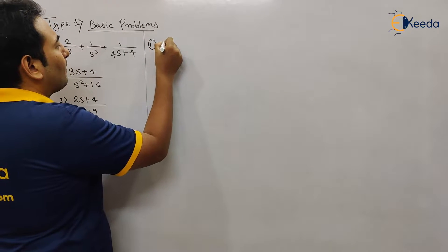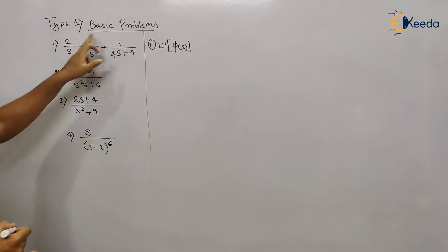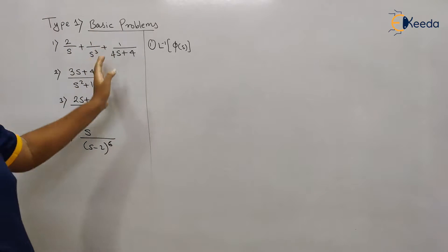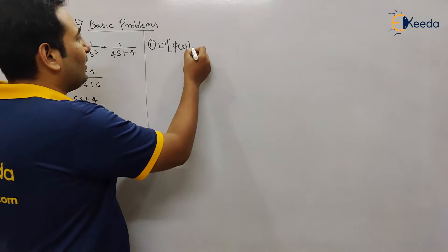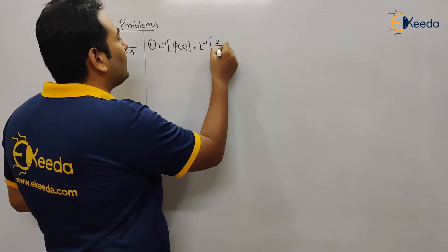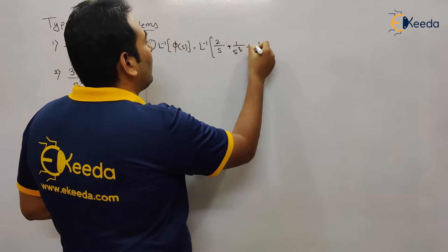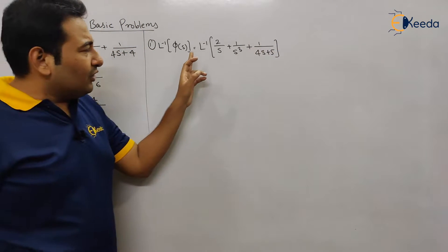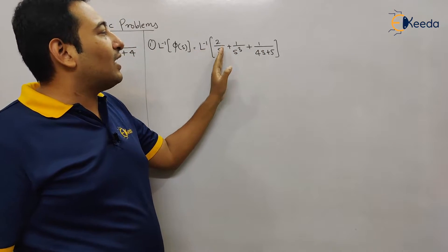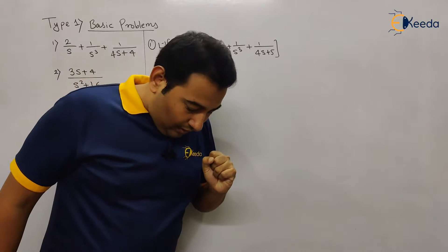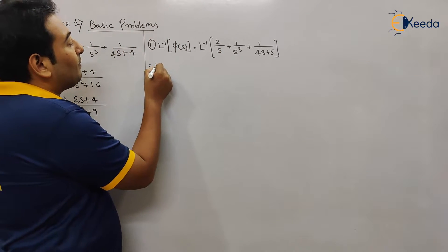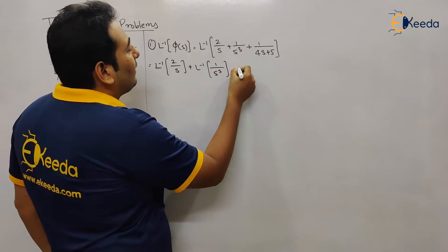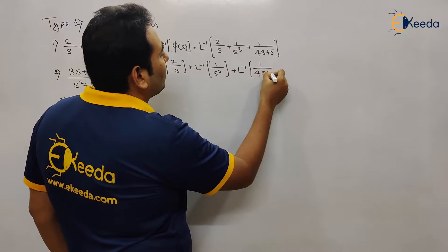Let us start with the first problem. Let us assume the given function as phi of s. In case of Laplace inverse, all the problems will be in terms of s and all the solutions will be in terms of t. So here it is Laplace inverse of 2/s + 1/s³ + 1/(4s+5). The basic property will remain the same — you can separate the Laplace inverse because all the terms are separated with plus or minus. So let us separate: Laplace inverse of 2/s + Laplace inverse of 1/s³ + Laplace inverse of 1/(4s+5).